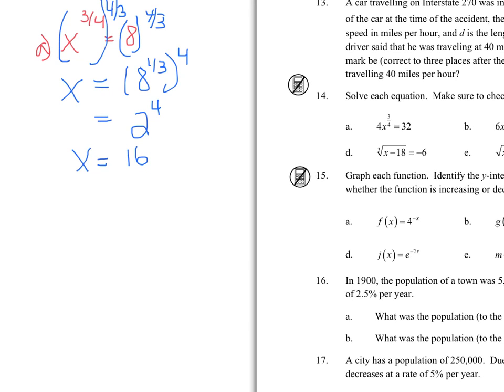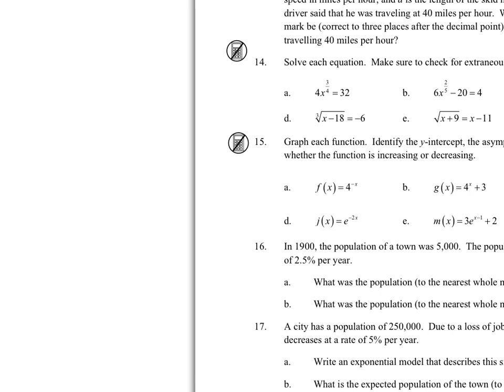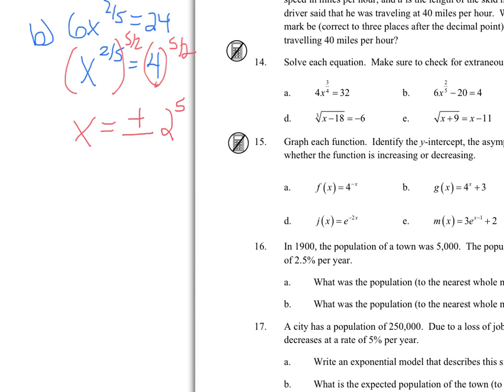Now for B, we have to add the 21st, divide by 6, and now when we raise both sides to the 5/2, because the denominator is an even number here, we have to remember our plus or minus. And now 4 to the 1/2 is 2 to the 5th, and then that gives us plus or minus 32.